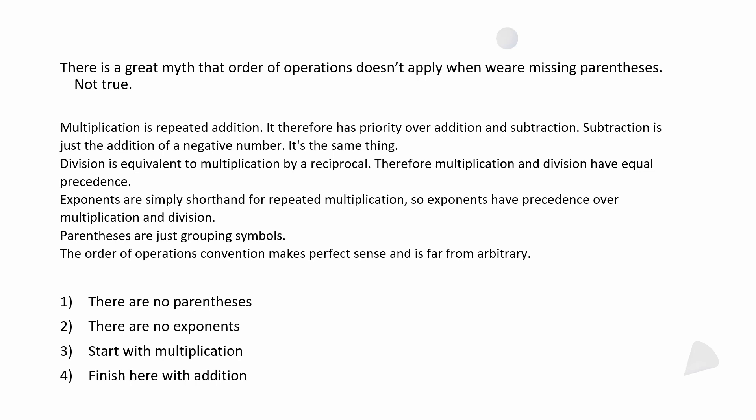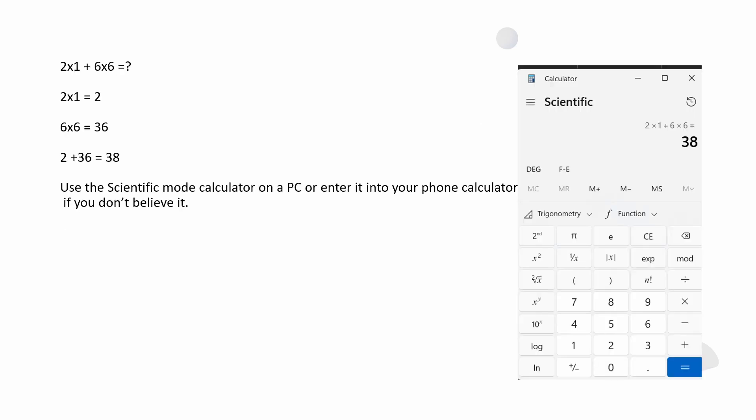So in this problem, we don't have parentheses, there are no exponents, so we start with multiplication because we don't have division, and then finish with addition. When we look at 2 times 1 plus 6 times 6: two times one is two, and six times six is 36. We did the multiplication. Now let's add the results: two plus 36 is 38.